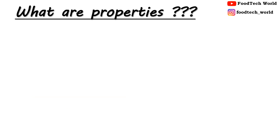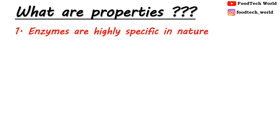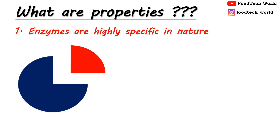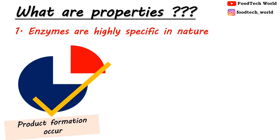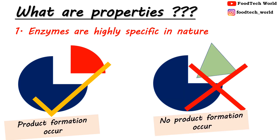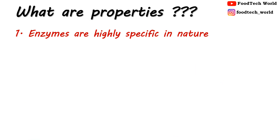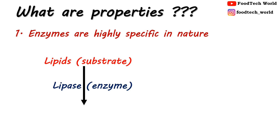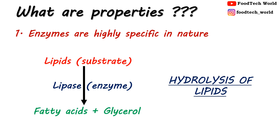Now what are the properties of enzymes? Enzymes have high specificity and remarkable efficiency to act upon a specific substrate and convert it into a desired product. Enzymes and substrates must be compatible to each other — only then they can form an enzyme-substrate complex and convert the substrate into the desired product. For example, for lipid hydrolysis, lipid is the substrate and the enzyme specific for it is lipase. Lipase acts on lipid and forms fatty acids and glycerol as products.